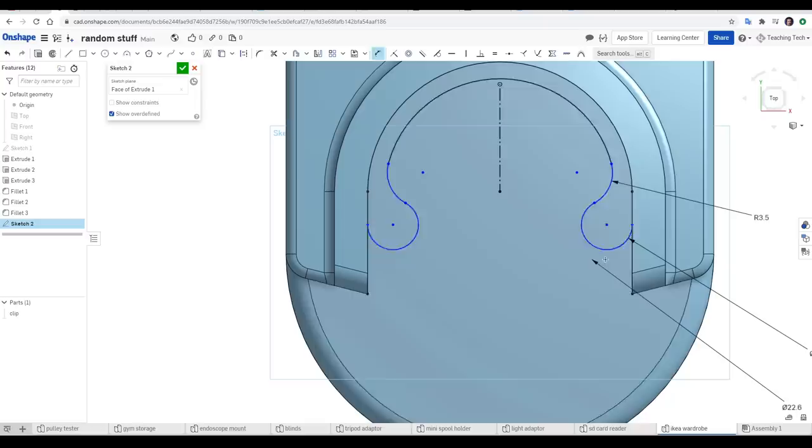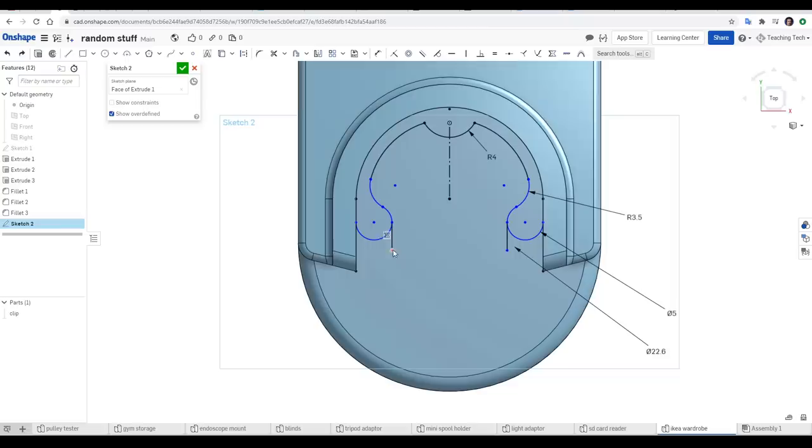We continue adding in features bit by bit, just using arcs, straight lines, and circles. For things I can measure, I'll dimension accurately. For anything else, close enough is good enough in most cases.